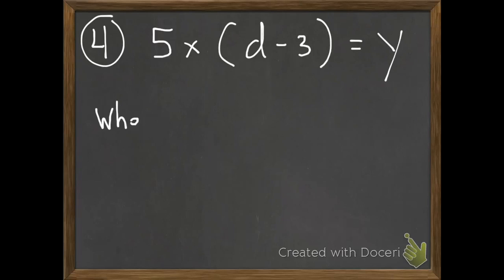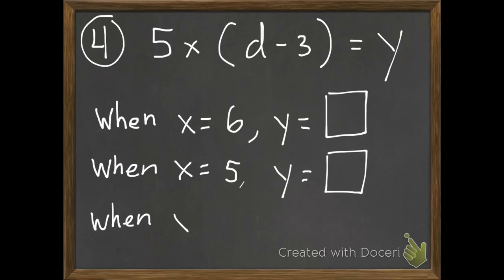Number 4, our last one. It's going to have three parts, kind of like my second example. So we have 5 times d minus 3 in parentheses equals y. We want to know what y equals when x is 6, when x equals 5, and when x equals 4. Bring those into class tomorrow, and we'll check to see how you did.